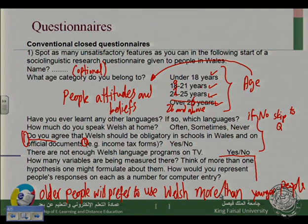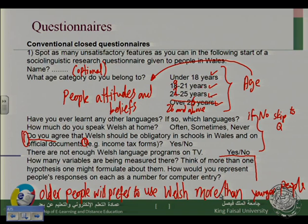The key point from today's lecture: just to let you know that a very simple questionnaire can have a lot of problems — with demographic information or what is called non-linguistic information, because this has nothing to do with language. I am asking about your name, your age — these are called non-linguistic information. And then we start the language or linguistic information. Still we have some problems: some leading questions, some double questions, sometimes unanswered questions. We need to be aware of all of these when using questionnaires.